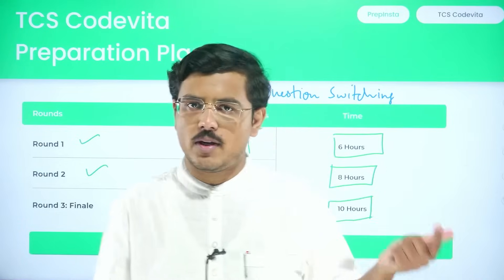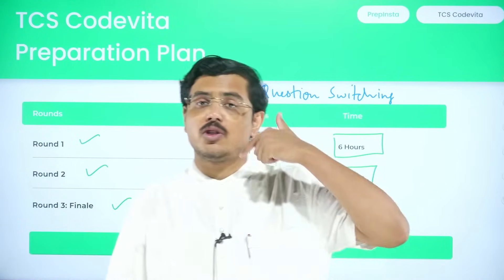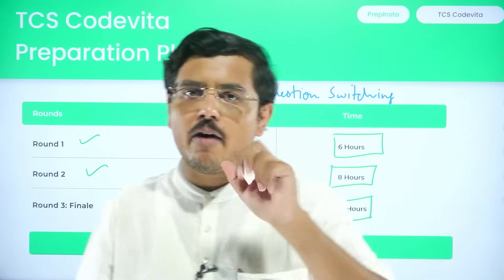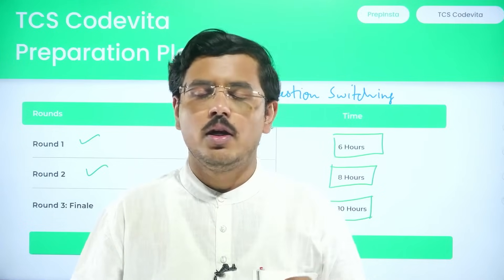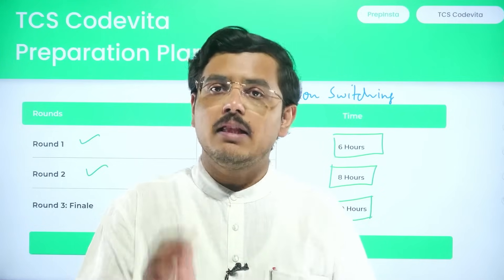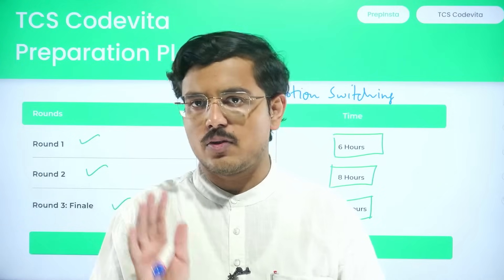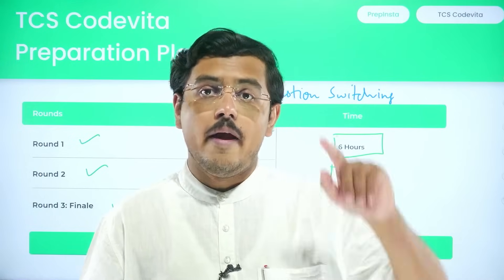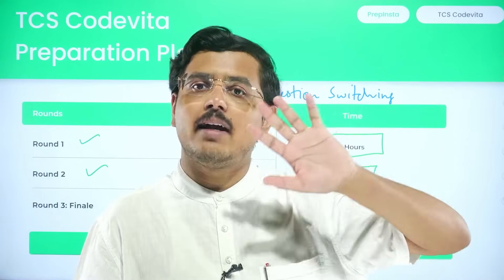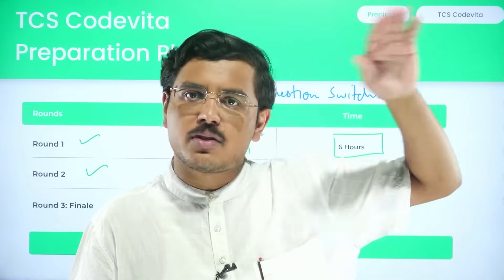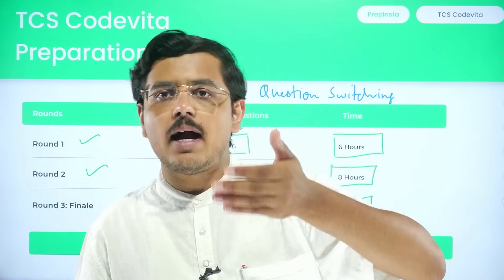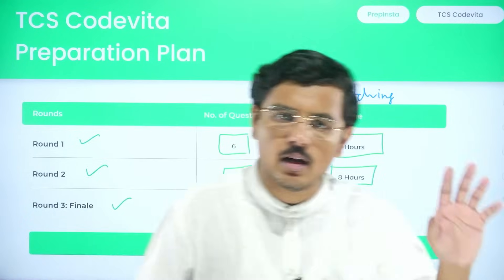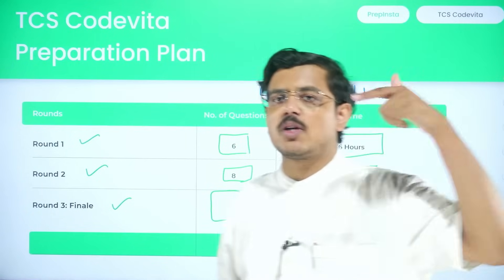For example, you started question one and couldn't solve it, so you switch to question two. At that same moment, the timer for question one continues to elapse. Say you spent half an hour on question one and then switch to question two — question two's timer begins. After spending another half hour on question two, question one's remaining time has also been fully elapsed, so if you try to come back, question one would be exhausted. The timer for every question will keep going on.